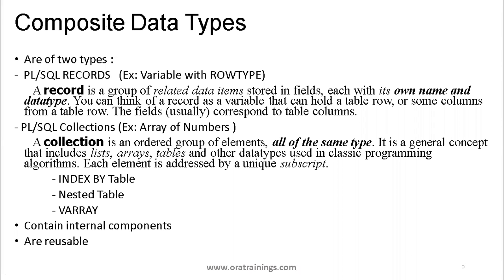Let's start with the first thing. In Oracle database, when you deal with SQL or PL/SQL, we have data and each data corresponds to a specific data type. Data types are further divided into simple types as well as composite types, also called complex data types. A simple type is a variable which can hold only one value of one type — for example, employee number, which is of data type number.